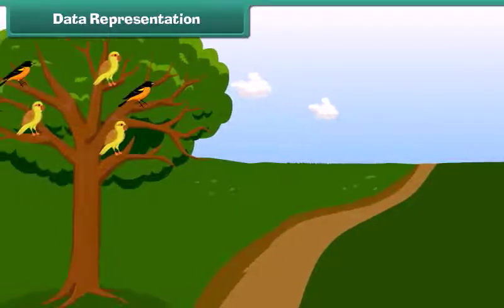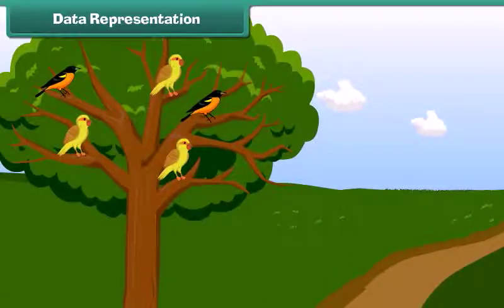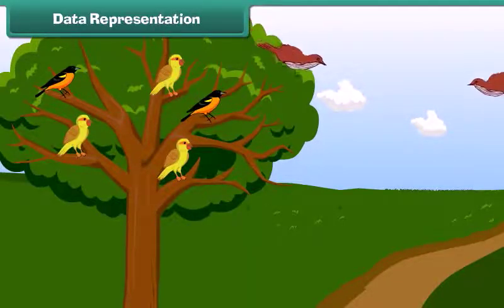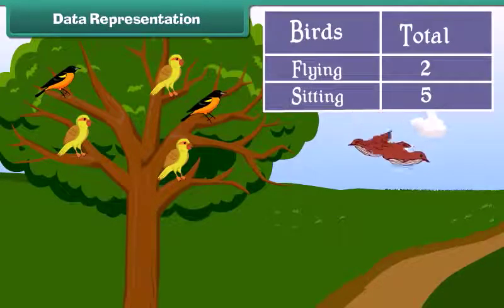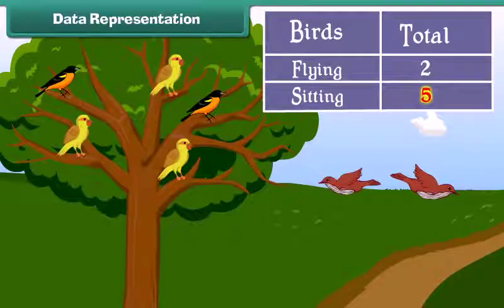It's a pleasant morning. Look at the birds near the branch of tree. We will now find the data of birds from this tree. There are 2 birds which are flying and 5 birds which are sitting on the tree.